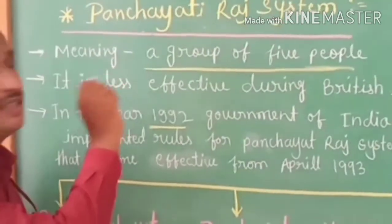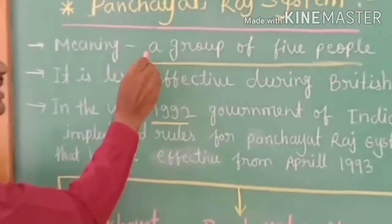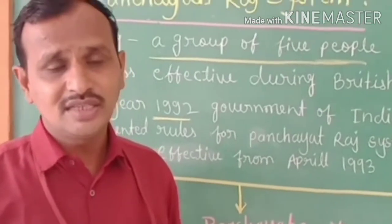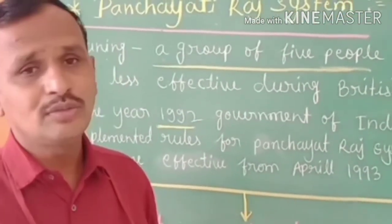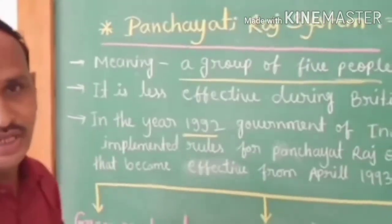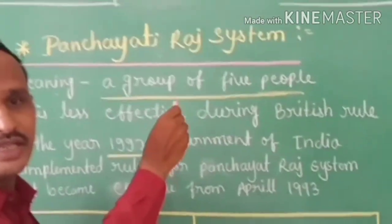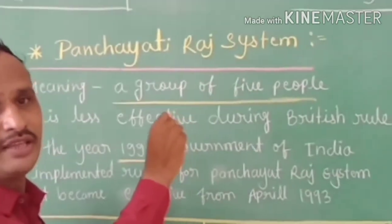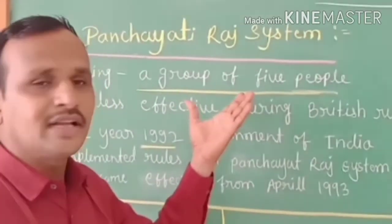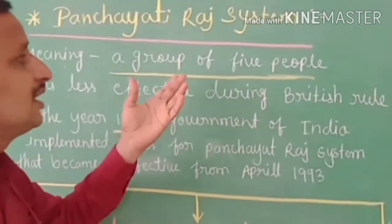What is the meaning of Panchayati Raj System? Panchayati means a group of five people, or a committee of five elder persons. These five people are selected as a Panchayati — they are selected by the villagers and they are called Panch. That is why the name Panchayati comes from this.